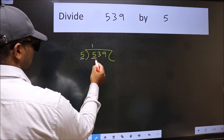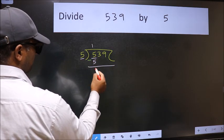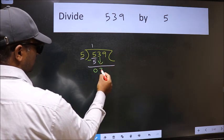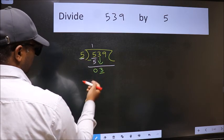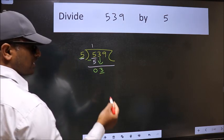Now we should subtract. We get 0. After this, bring down the beside number, so 3 down. Now here we have 3 and here 5. 3 is smaller than 5, so we should bring down the second number.